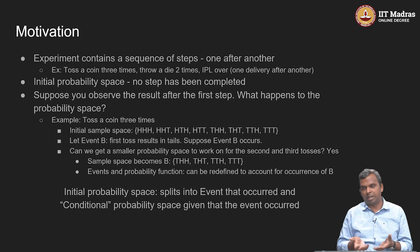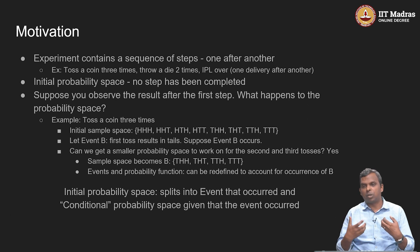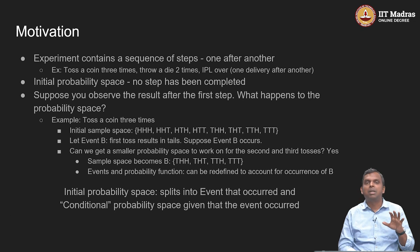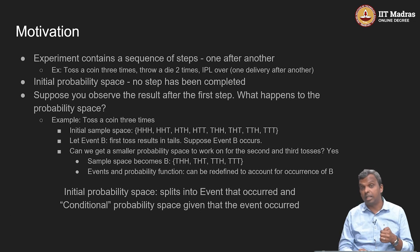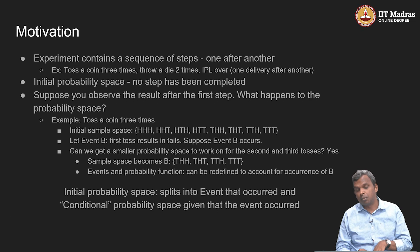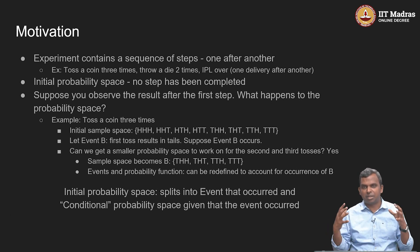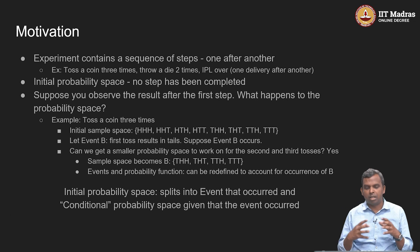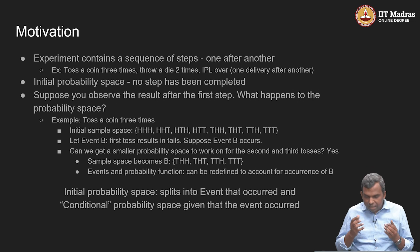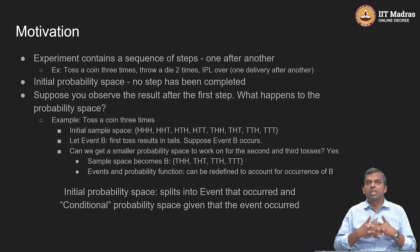Before anything starts, before even the first action, you start with a very big probability space. After the first action, the number of possibilities, the number of outcomes, has shrunk a little bit — it depends on what happened in the first step, but it seems to have shrunk. For example, if you are tossing a coin three times, after you have tossed it once, things have reduced in possibility — you are only tossing two times more. So you start with an initial probability space, observe the first step, and you have observed part of your outcome.